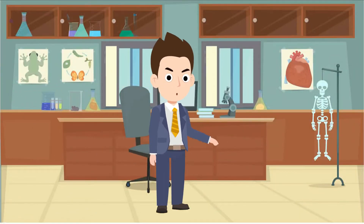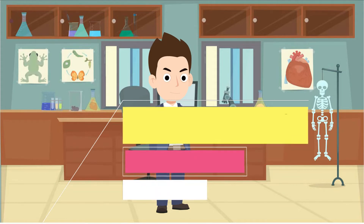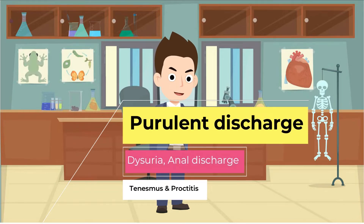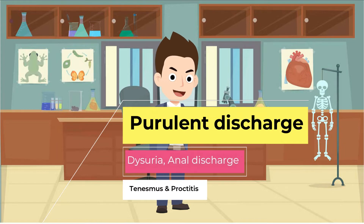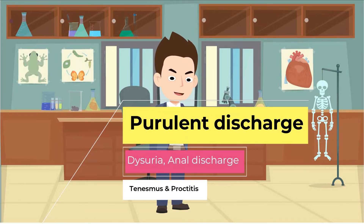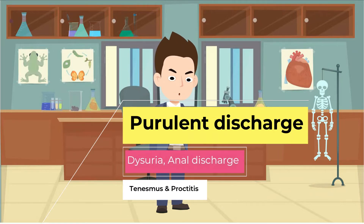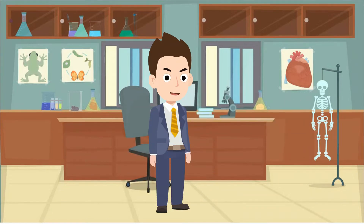Symptoms vary between men and women and may present with a purulent urethral discharge in 80% of cases. The discharge may or may not contain blood and is sometimes associated with dysuria, where there is a burning sensation when urinating. Anal discharge, tenesmus, and proctitis may be seen if individuals have anorectal involvement.